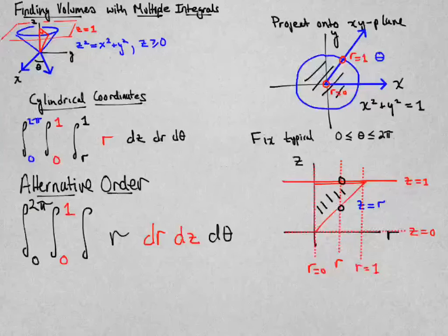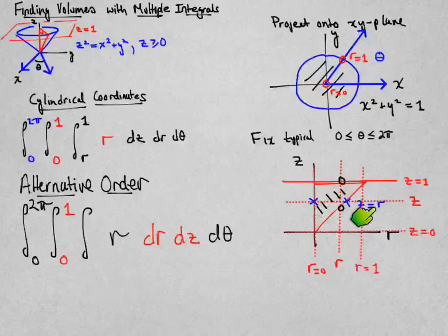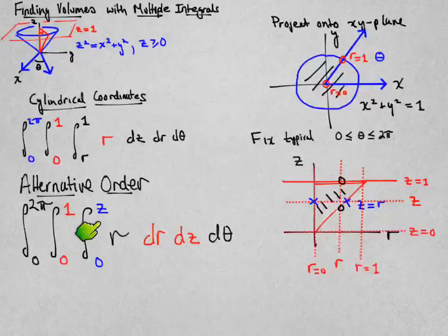And then just as we did before, but now for z, I think about a typical value of z in between there and think about how it slices through the region. When r is 0, it enters. And when it exits is when my r value and my z value agree. So my limits of integration for r will be from 0 to z.